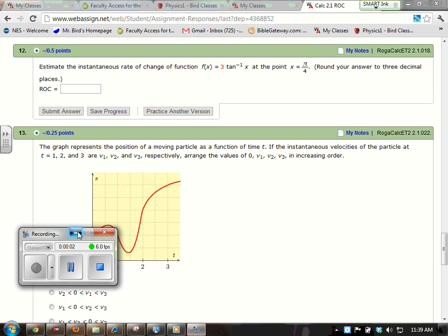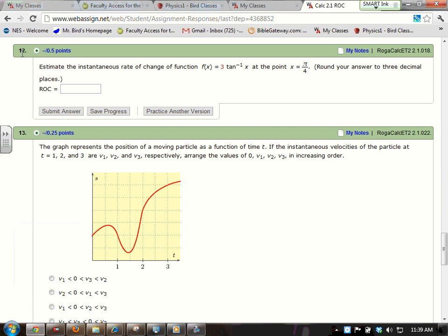So here are a few brief tips in regards to question 12 on the rate of change assignment from the Rojowski Calculus Early Transcendentals Second Edition. This is chapter 2, section 1, question 18 from the textbook.